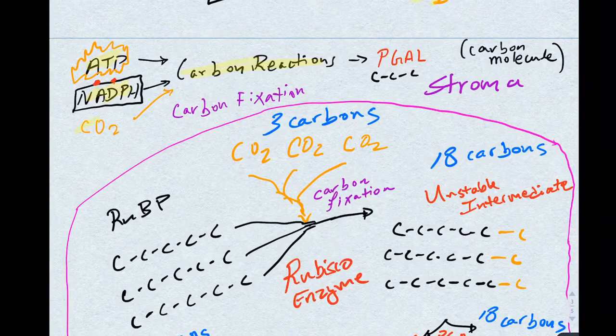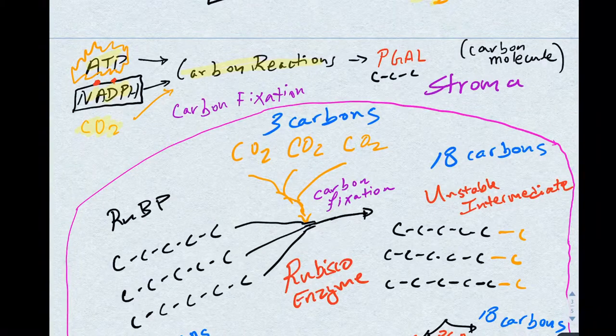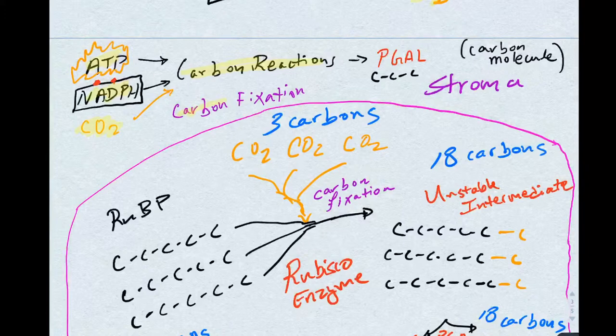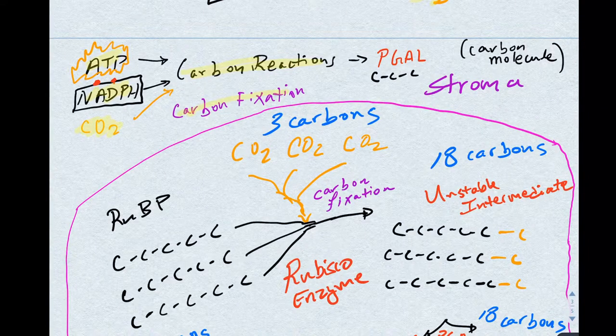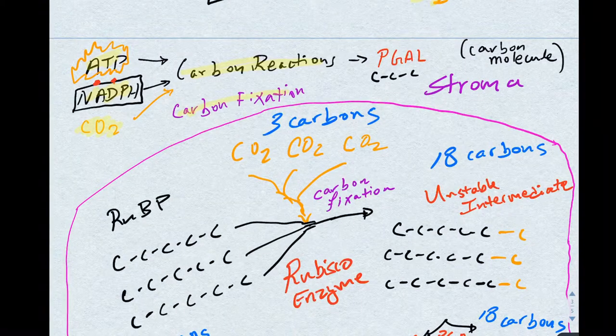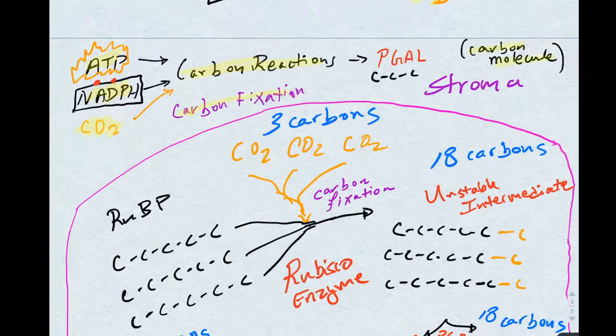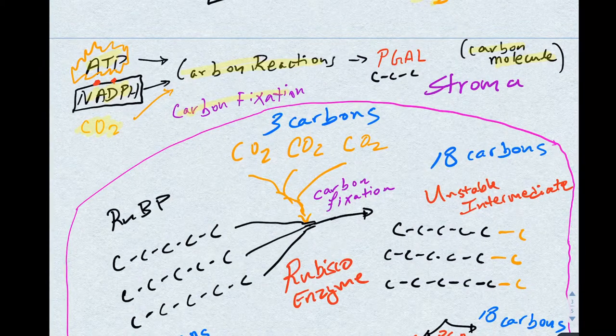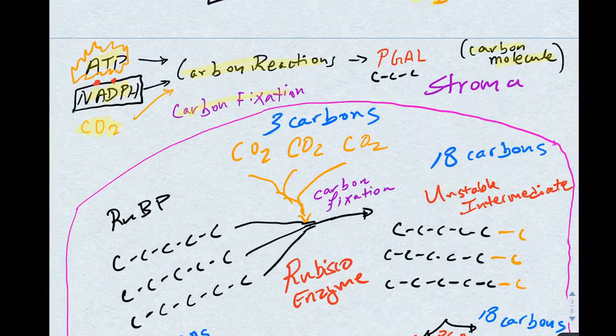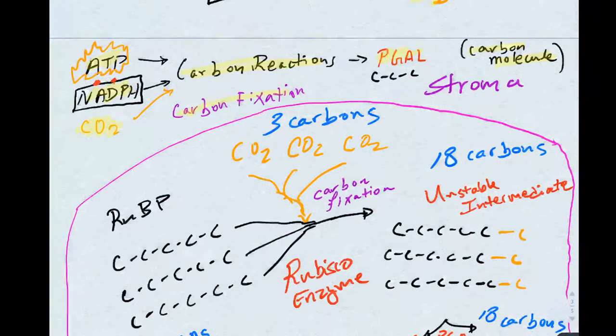Carbon dioxide from the atmosphere, via a process known as carbon fixation, will be converted into a carbon molecule that the plant can use to make sugar. This carbon molecule is called a PGAL, and it has three carbons.